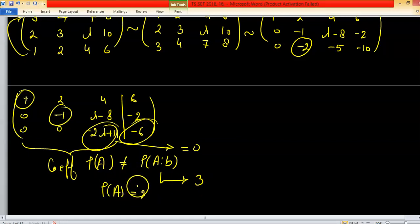It means -2lambda + 11 = 0. We have the value of lambda equals 11/2.